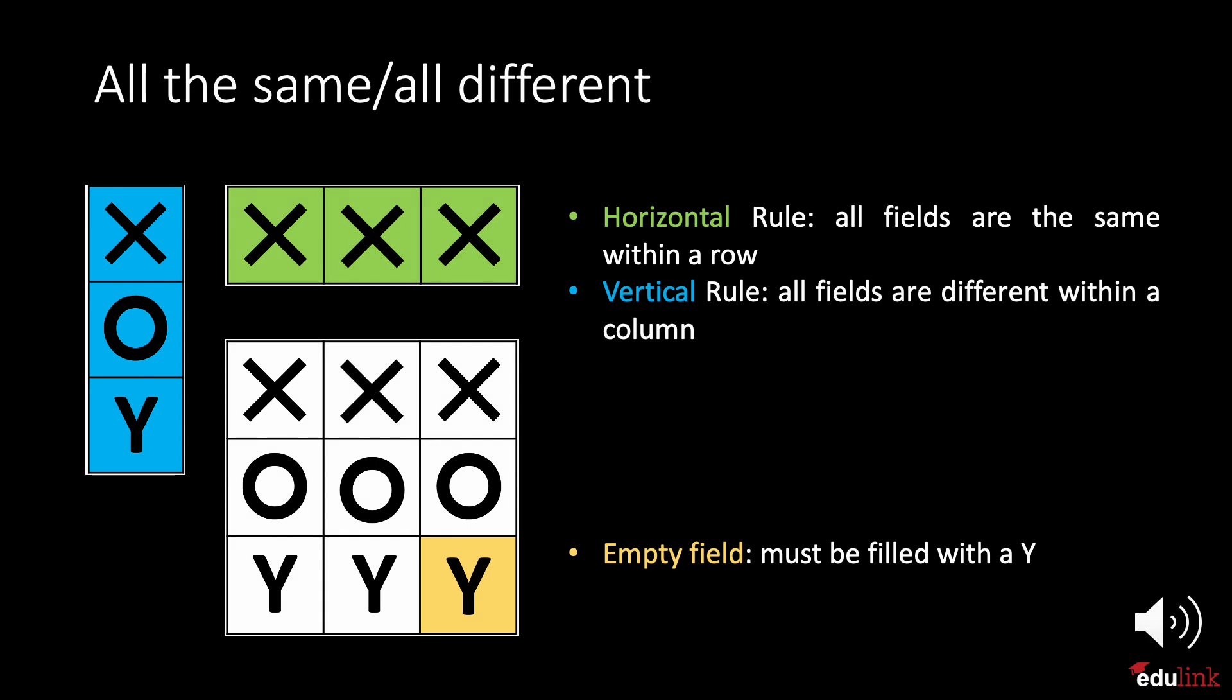Here we see that each row must contain the same shape horizontally. The rule is, everything in the row is the same. Next, we can check vertically and see that an O follows an X and a Y follows an O. The rule is, everything is different within a column. Together, the vertical and horizontal rules allow us to predict that the empty square must be filled with a Y.